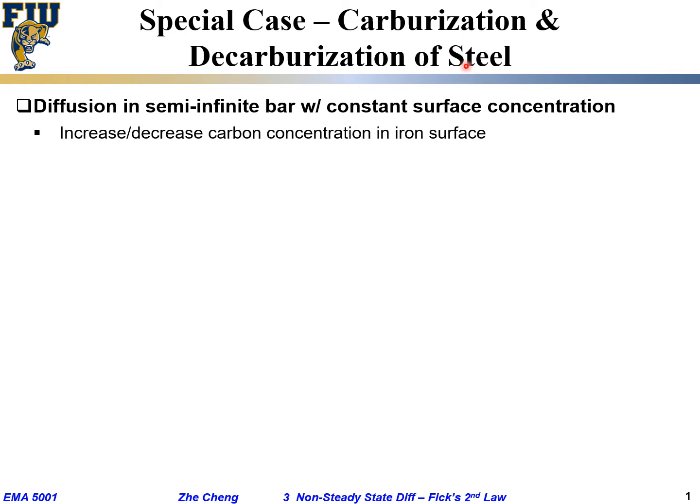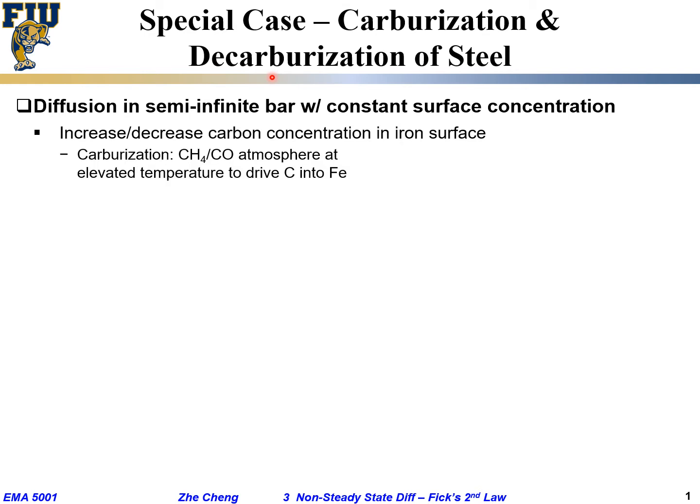A related case is what we call carburization and decarburization of steel. Steel is the most common metal material. Carburization means to put carbon into the system, while decarburization means to remove carbon from the steel. How do you do that?